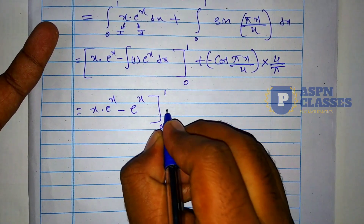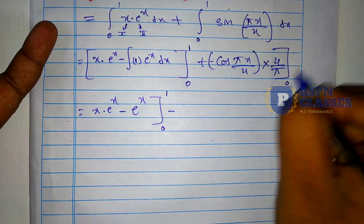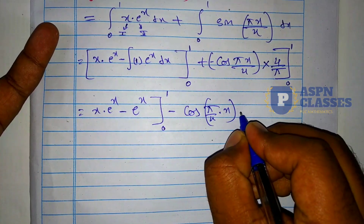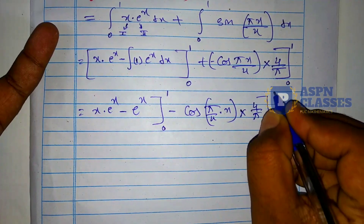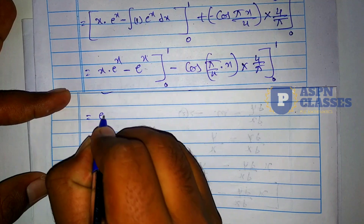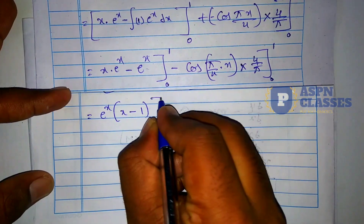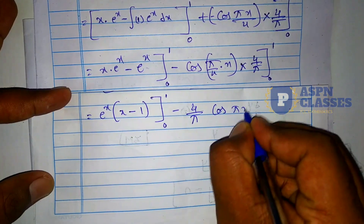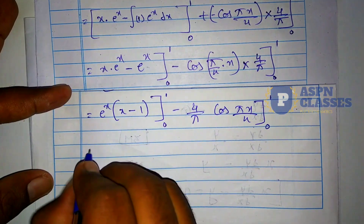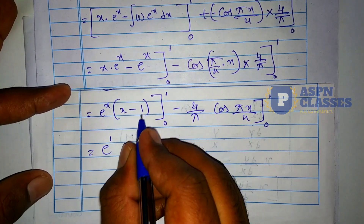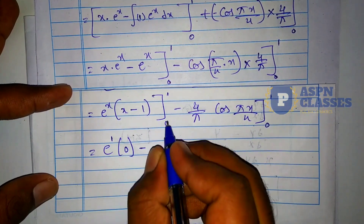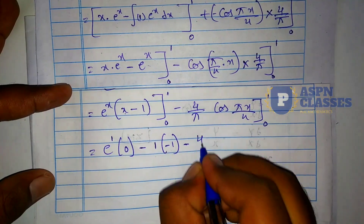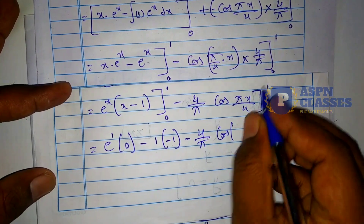Applying limits 0 to 1 to x·eˣ - eˣ: at x=1 we get 1·e¹ - e¹ = 0; at x=0 we get 0 - e⁰ = -1. So the result is 0 - (-1) = 1. For -(4/π)·cos(πx/4): at x=1 we get -(4/π)·cos(π/4) = -(4/π)·(1/√2); at x=0 we get -(4/π)·cos(0) = -(4/π)·1.